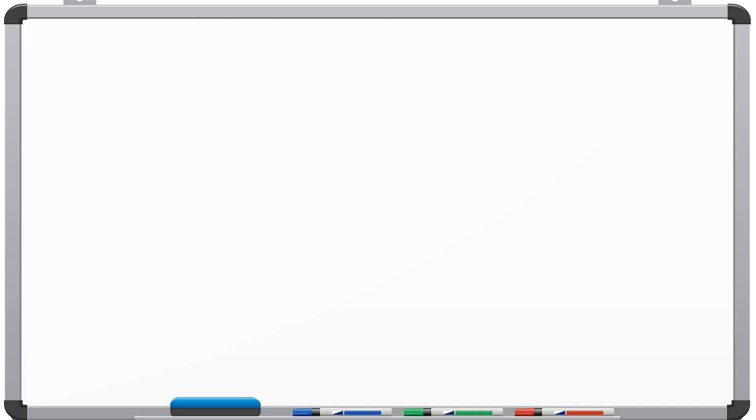How many number of insulation classes are present with respect to electrical equipment? A: 5, B: 6, C: 7, D: 8. The correct answer is 7.